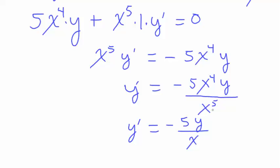So we have 4 up here, 5 down here. Cancel 4 out from both numerator and denominator. And there we go. So we get y prime equals negative 5y over x.